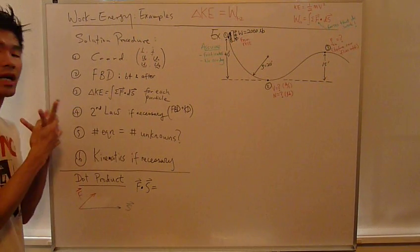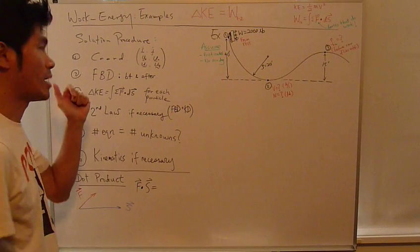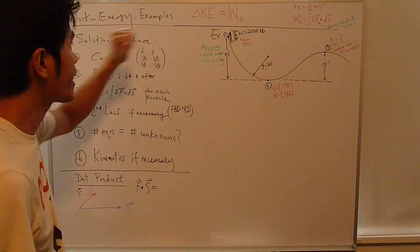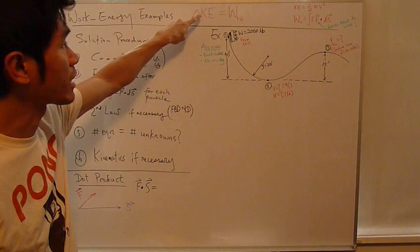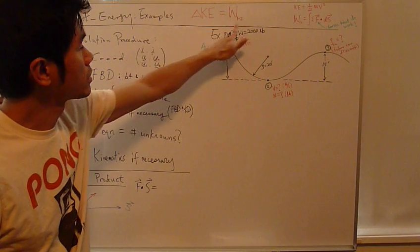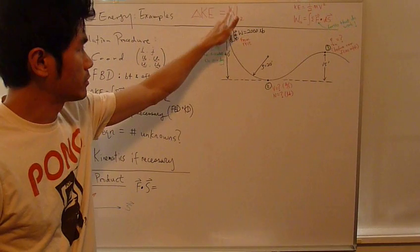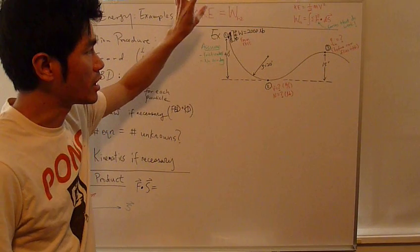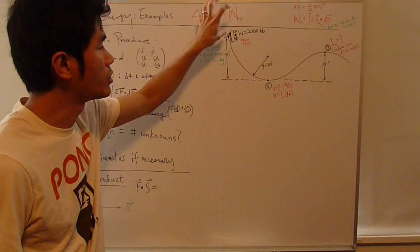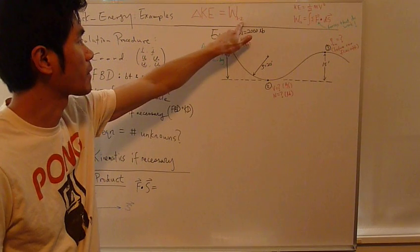Now that we've introduced the work energy method, let's do some examples. Let's just recap. Work energy equation is change of kinetic energy equals work going from one to two. One is the initial position and two is the final position.